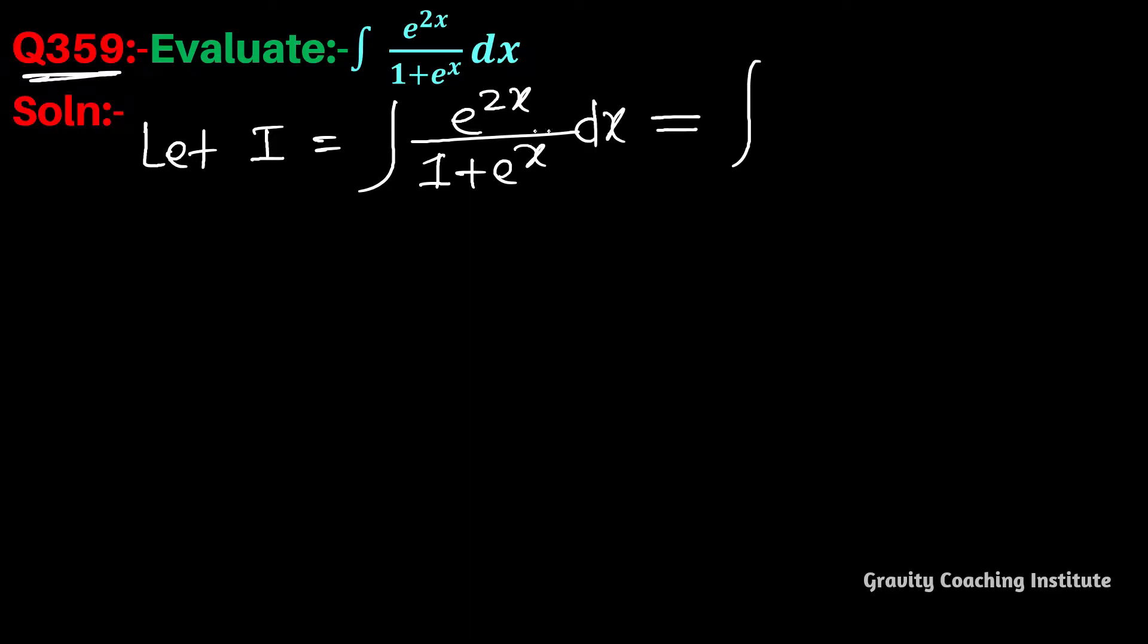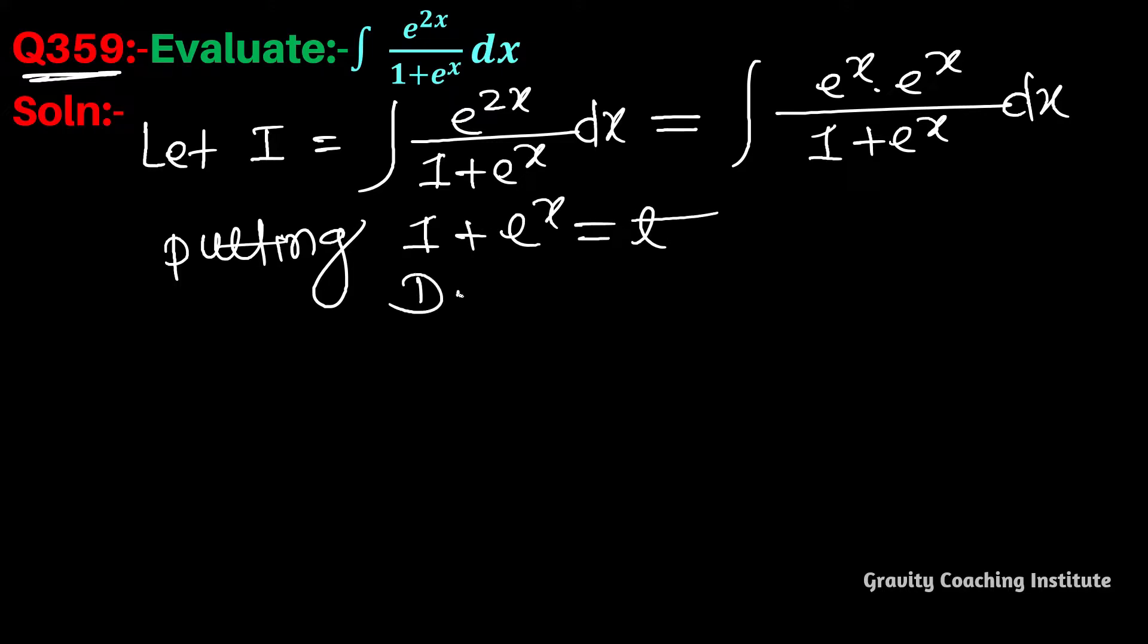And then e to the power 2x gives us e to the power x into e to the power x. And now we will put this denominator t. 1 plus e to the power x equal to t. Now differentiate with respect to t.